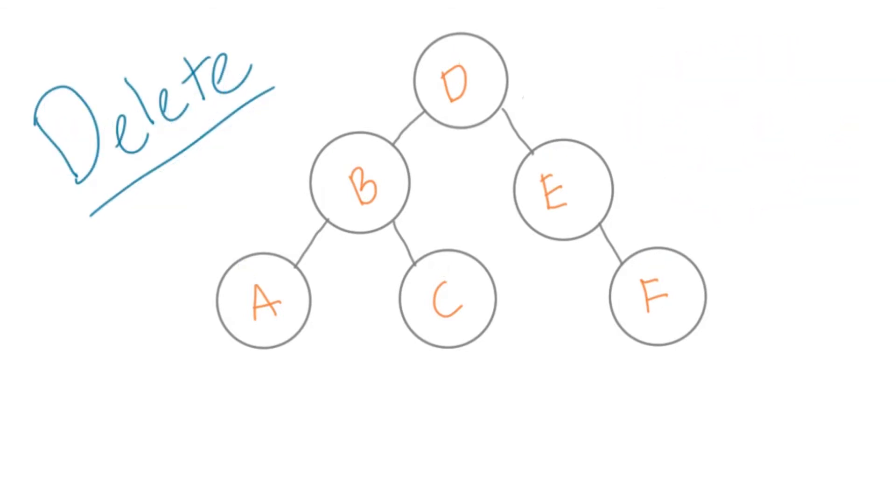A delete operation often starts out with a search, since you need to find the node you want to delete. If you're deleting a leaf, you can simply delete it and move on. However, if you delete an internal node, you'll suddenly have a gap in the tree.